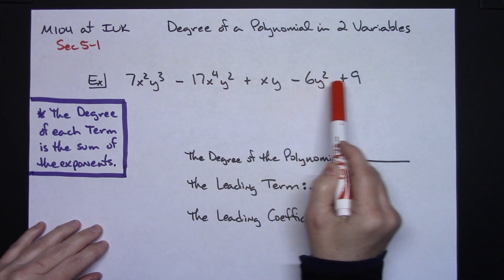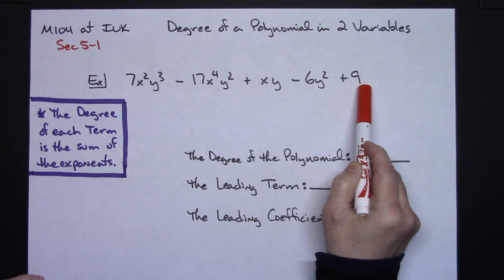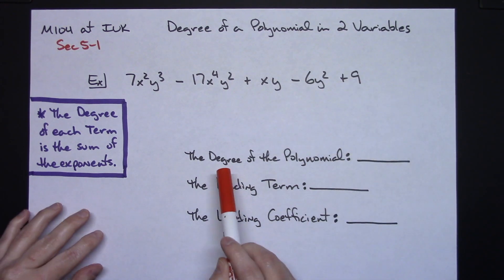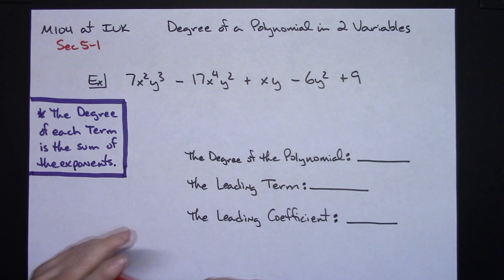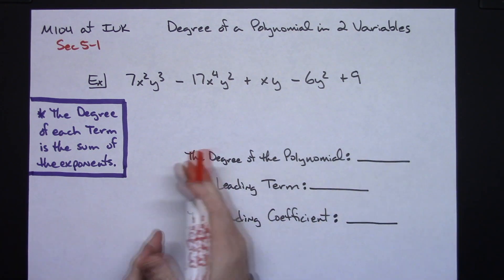So each term is going to have a degree. The overall degree of the entire polynomial is going to be the highest degree that's in there.